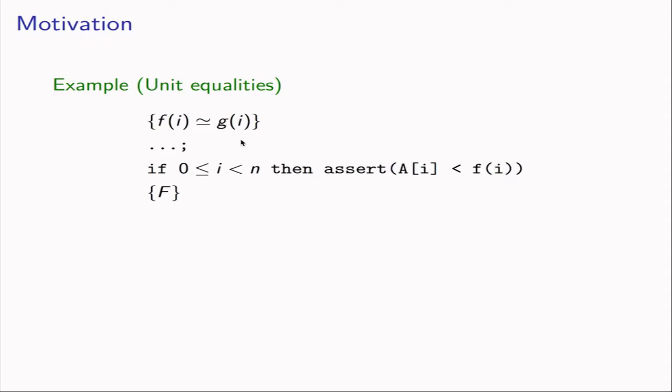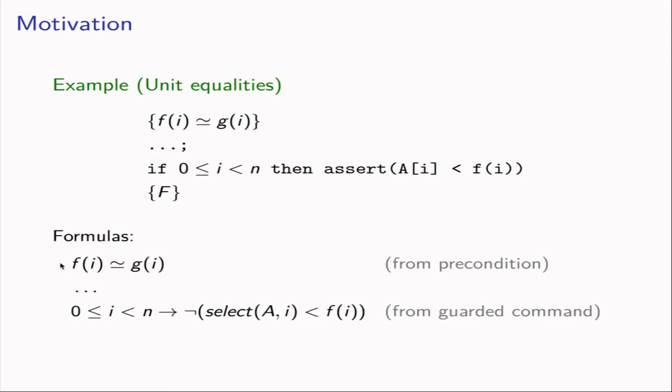Consider the following Hoare triple, where we have f(i) = g(i) in the precondition, then some statements we don't care about, and then an if-statement with an assertion inside. We want to prove that this assertion is never violated. We transform this into logical formulas: the precondition is a unit equality, and the if-statement becomes an implication with the condition on the left and the assertion semantics on the right. We abstract away the exact predicate and focus on these two formulas.